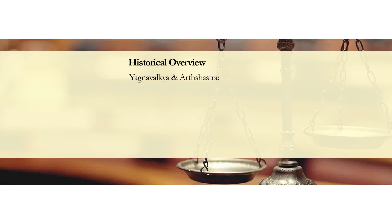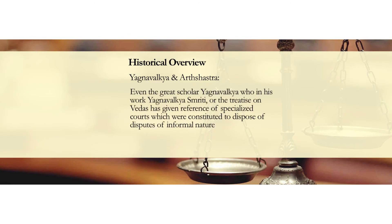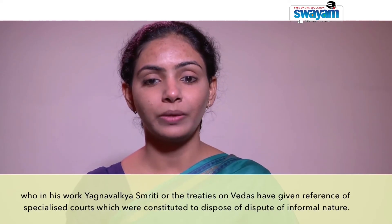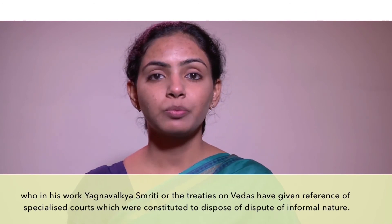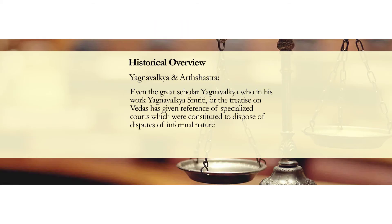Yajnawalakya and Arthashastra also mention the existence of informal modes of dispute resolution. The great scholar Yajnawalakya, in his work Yajnawalakya Smriti, a treatise on Veda, gave reference to specialised courts constituted to dispose of disputes of an informal nature. Other such courts established for the expeditious and informal disposal of disputes were established on the basis of the nature of dispute, including courts such as Shreni and Puga, mentioned in Yajnawalakya.